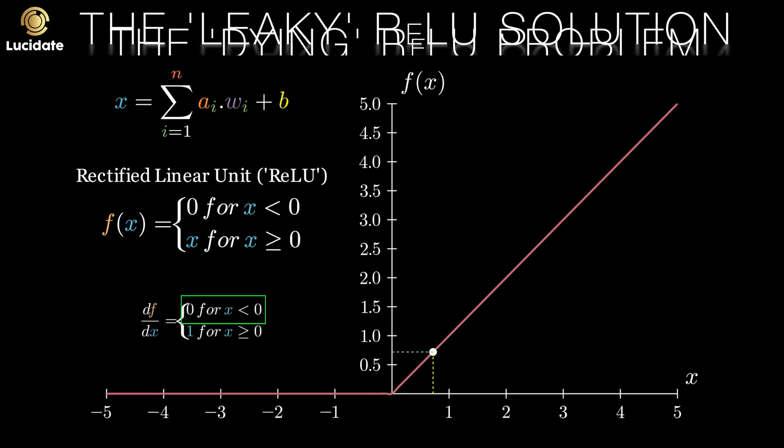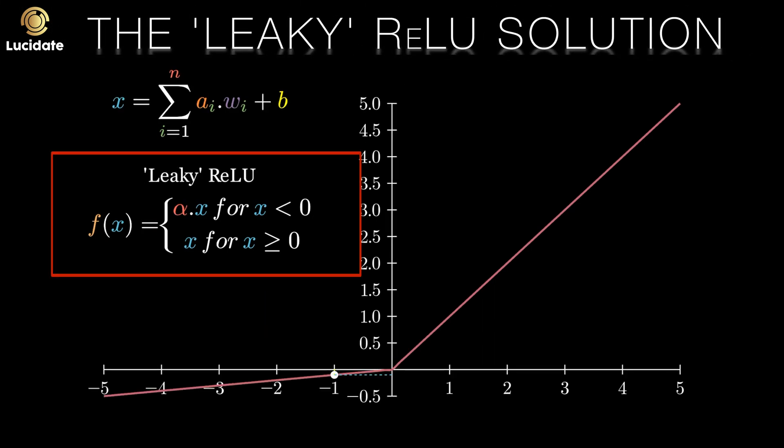One is to adopt a leaky RELU, where values below zero are multiplied by a tiny constant. The default for leaky RELU is 0.01, but feel free to try out other values.